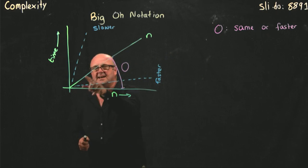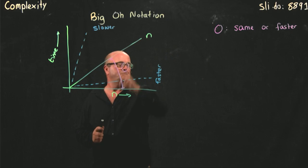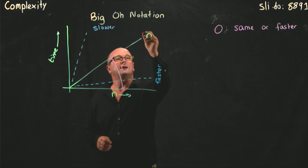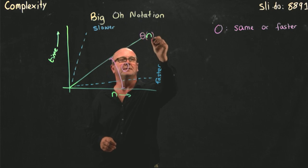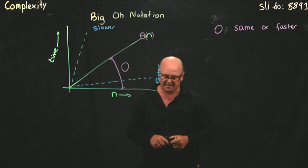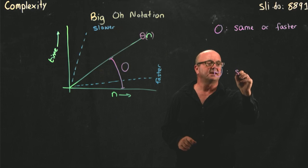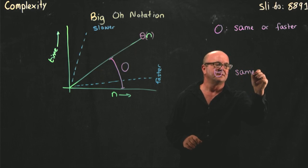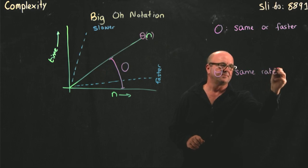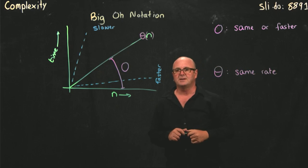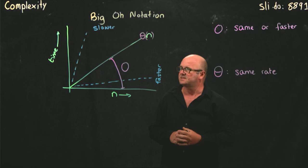If something's exactly the same as our line, then we call that theta complexity. So theta means it's growing at the same rate. And I'll show you what I mean by an example, with an example of this in just a second.